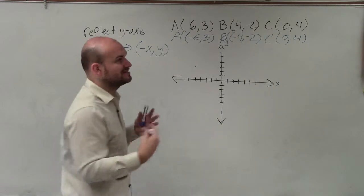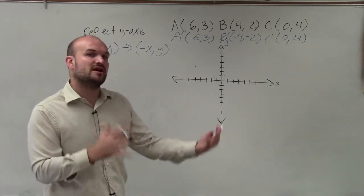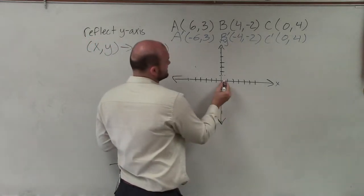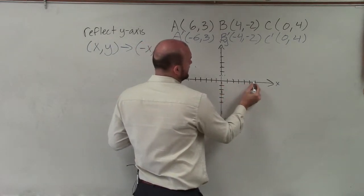So let's go ahead and graph the pre-image in the black, and then our new image in the blue, and see if that makes sense as far as a reflection over the y-axis. So a is 6 comma 3, so 1, 2, 3, 4, 5, 6, up 3.